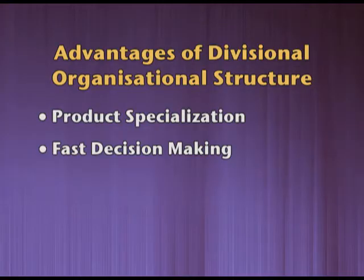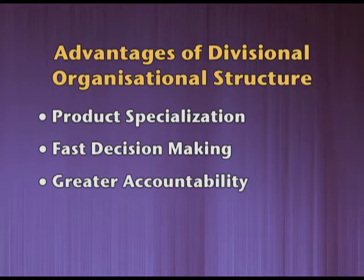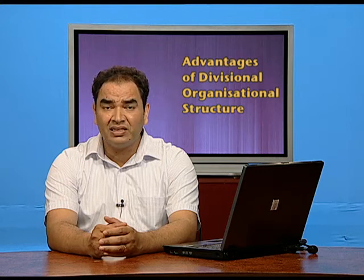The third advantage of Divisional Structure is greater accountability. Each division is independent and working in its own way. Decisions taken within the division help the organization achieve its objectives. But sometimes a division takes wrong decisions, causing losses. This helps the organization fix responsibility on that division for not achieving overall objectives, and the organization will make sufficient changes in that division only. So greater accountability exists for divisional heads, who are completely responsible for incurring losses or making profits.